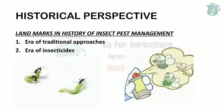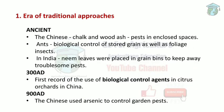In ancient times, the Chinese used chalk and sulfur to control pests, and ants were used as biological control agents to save stored grains. In India, neem leaves were placed in grain bins to keep away pests. In 300 AD, there is a record of the first use of ants as biological control agents against caterpillars and borers in citrus orchards in China. In 900 AD, the Chinese used arsenic to control garden pests.